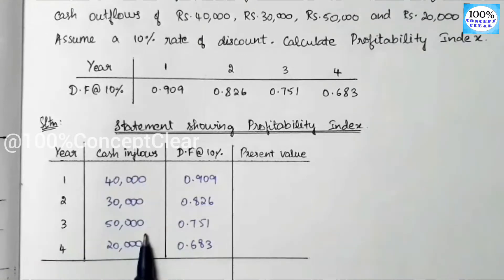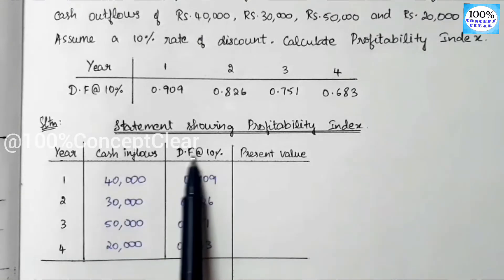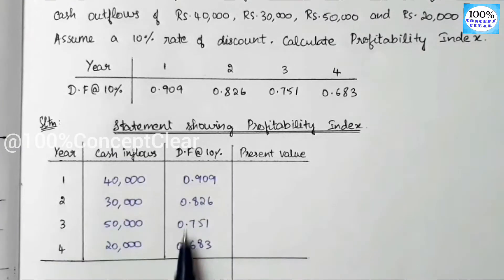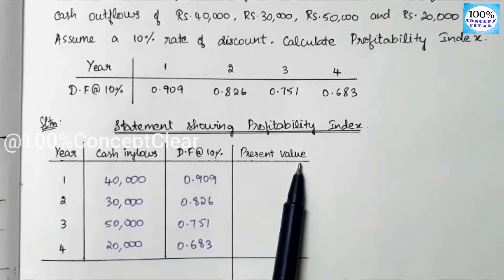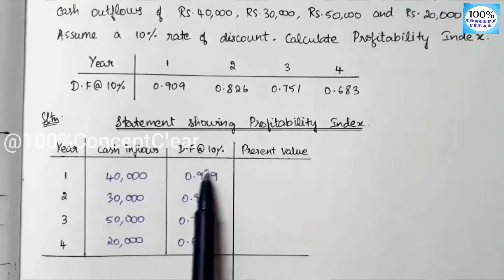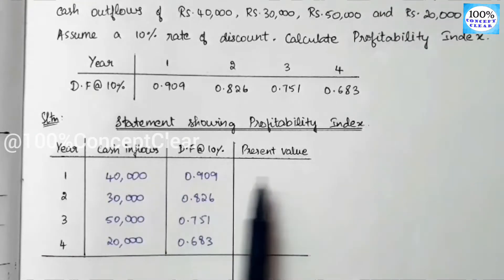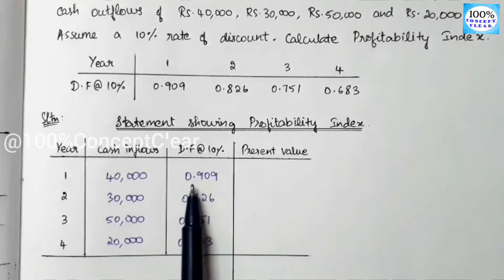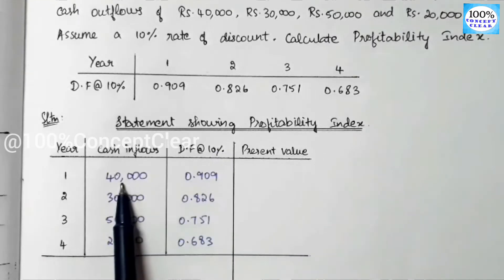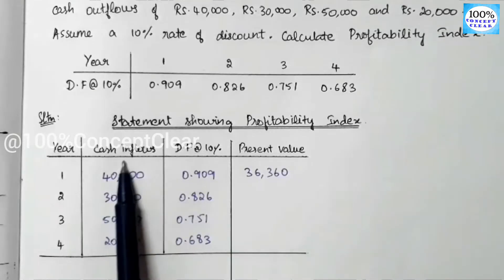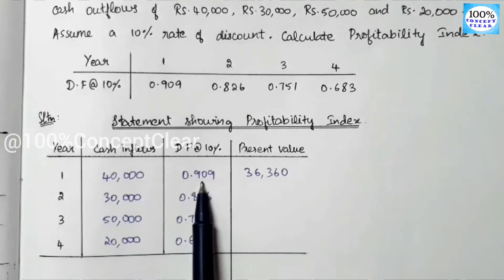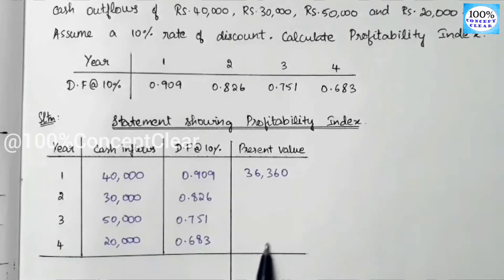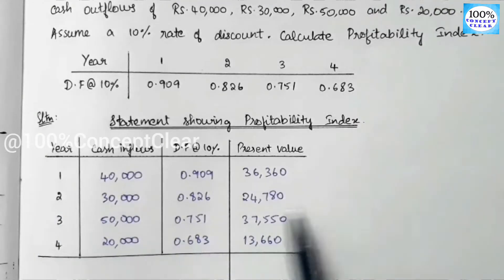We set up the Profitability Index table format with columns: Cash Inflows, PV Factor (Discounting Factor at 10%), and Present Value. The Present Value is calculated by multiplying Cash Inflow by the Discount Factor for each year across all 4 years.